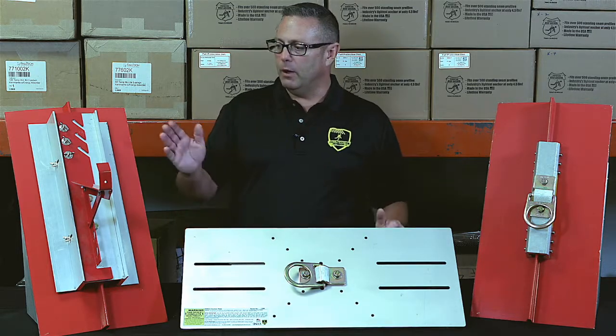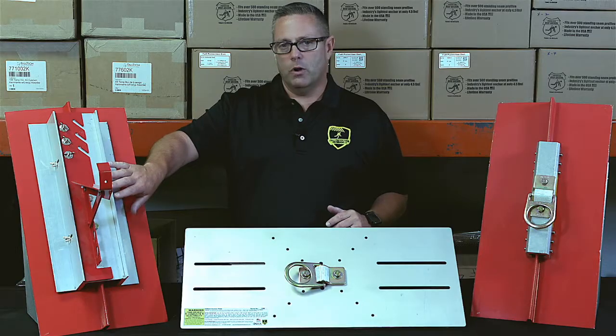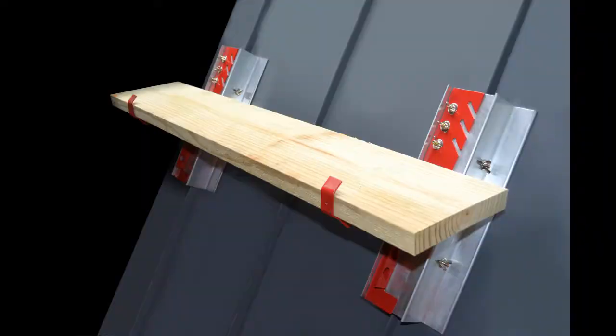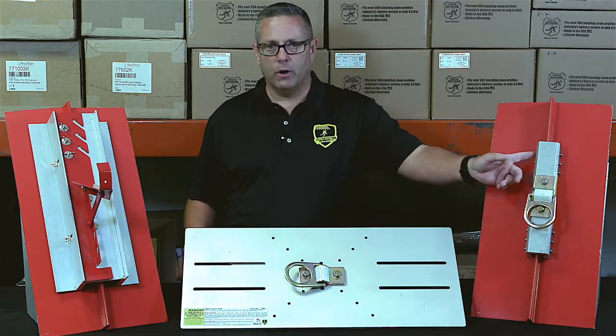The first adapter plate we developed was the SSRA2, the roof jack adapter. With the SSRA2, this allows you to put walk boards on a standing seam roof without penetrating the panels. This is just an add-on adapter plate to the SSRA1.